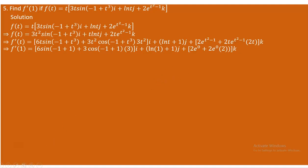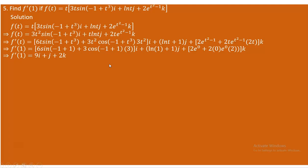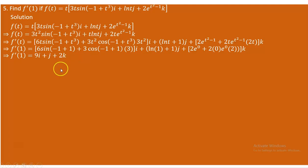Now substituting t equals 1 throughout: the first term in the x component turns to 0, so we are left with 3 times 3 equals 9 for the i component. For j: ln(1) is 0, so 0 plus 1 gives 1j. For k: e⁰ is 1, and 2 times 1 equals 2, so 2k remains. Therefore, the derivative of the given function at t equals 1 is 9i plus j plus 2k — a vector with components 9, 1, and 2.